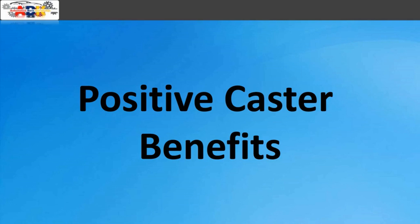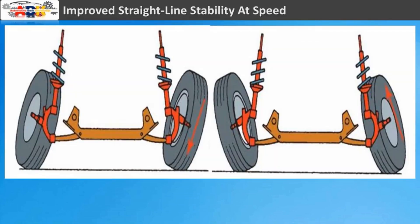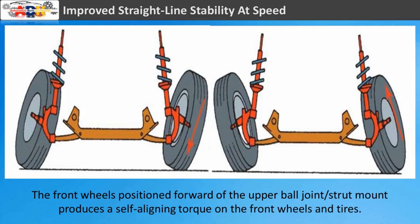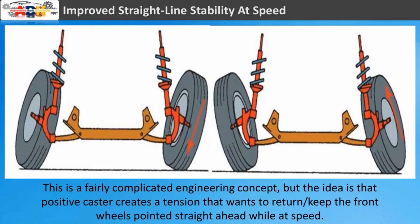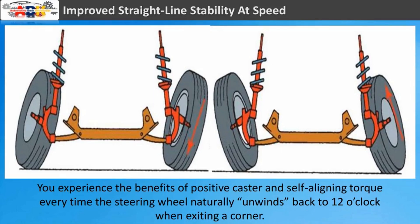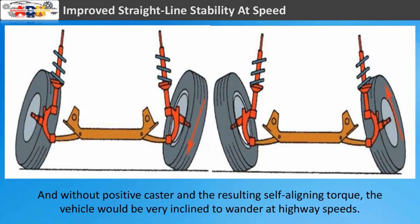Positive caster benefit: improved straight-line stability at speed. With the front wheels positioned forward of the upper ball joint or strut mount, positive caster produces a self-aligning torque on the front wheels and tires. This creates a tension that wants to keep the front wheels pointed straight ahead while at speed. You experience this every time the steering wheel naturally unwinds back to 12 o'clock when exiting a corner. Without positive caster and the resulting self-aligning torque, the vehicle would be very inclined to wander at highway speeds.